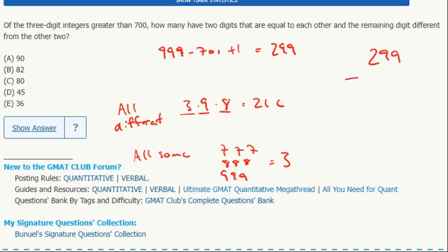So I do the total minus if they're all different minus if they're all the same.